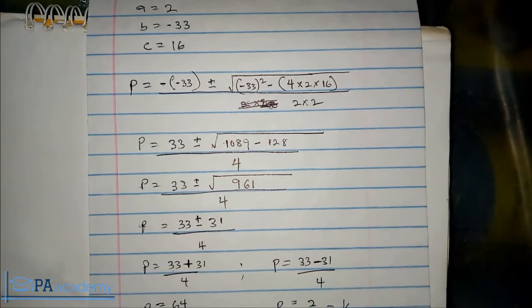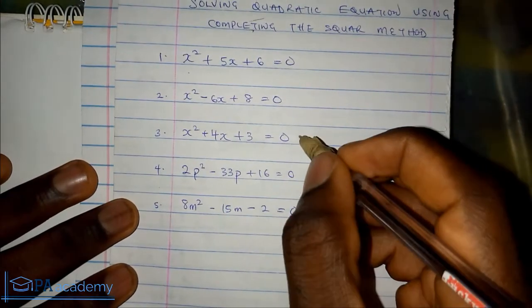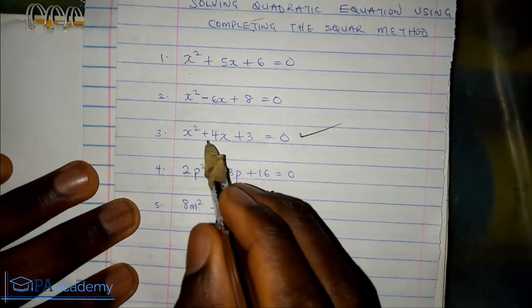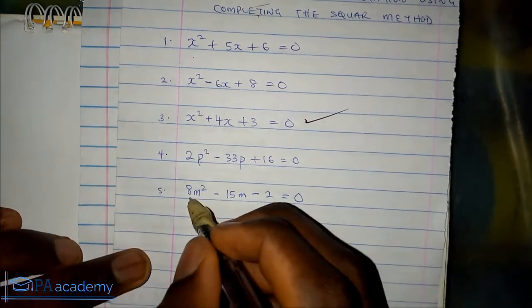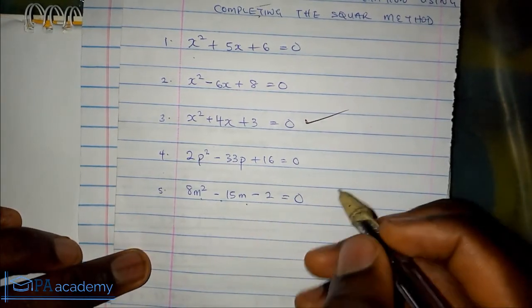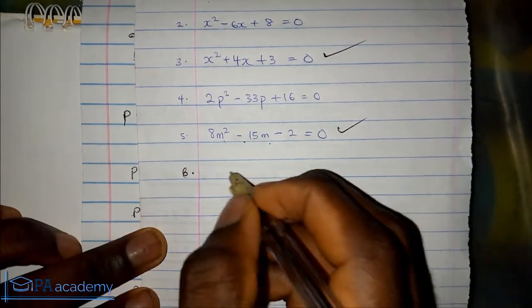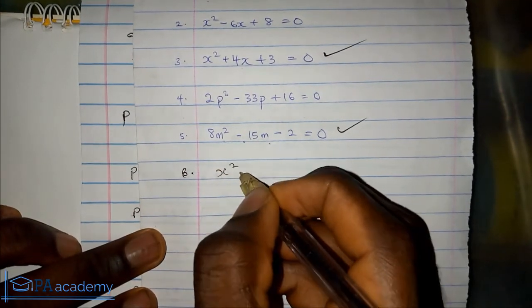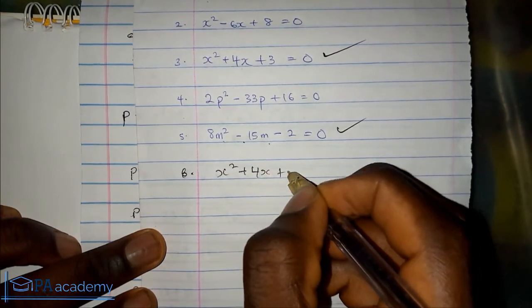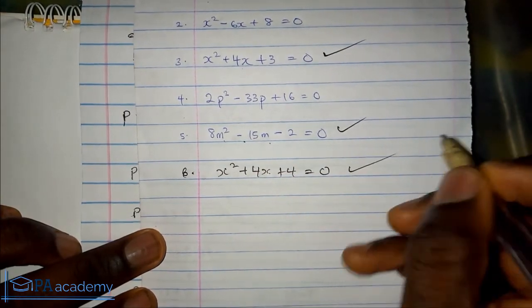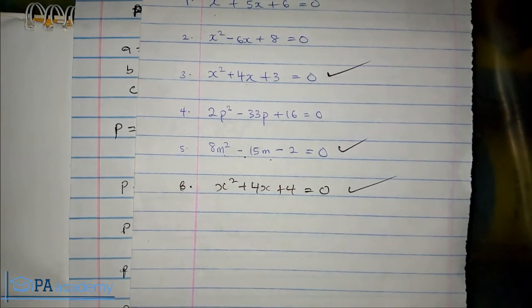What I want you to do now is, if you've been following this video, solve x squared plus 4x plus 3 using the quadratic formula, and also solve 8m squared minus 15m minus 2, and x squared plus 4x plus 4 equals 0. I want you to solve these three questions and let me know your answer in the comment section below.